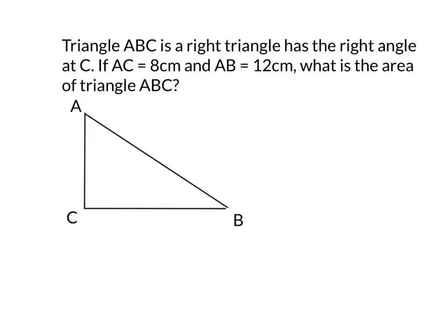Hello there, today we're doing a problem about a right triangle and we're trying to find the area. We know that we have a right triangle with the right angle at C, so there's a 90 degree angle.